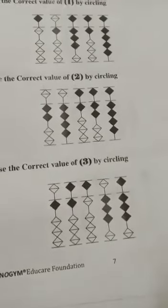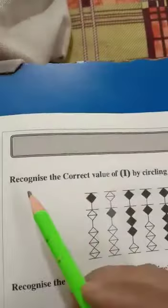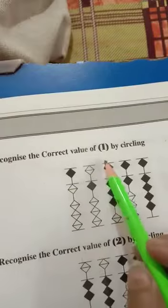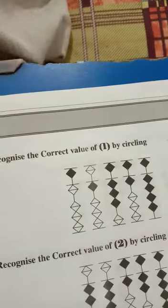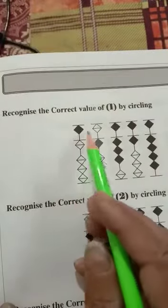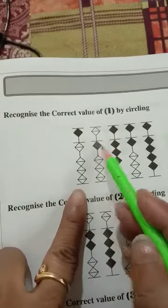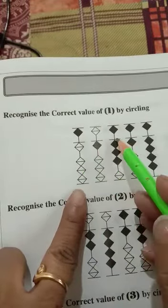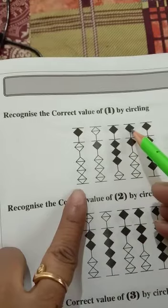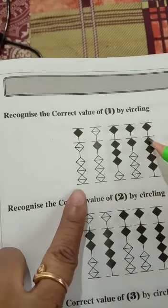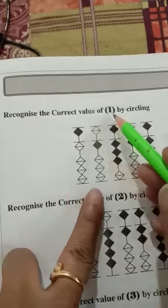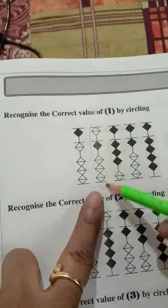Today we do page number 7. Recognize the correct value of 1. Upper bit 5, this one is 1, upper bit 5, 6, 7, 8. This one is 5, 6, this one is 5, 6, 7, 8. Value of 1 is this one, so now you circle.